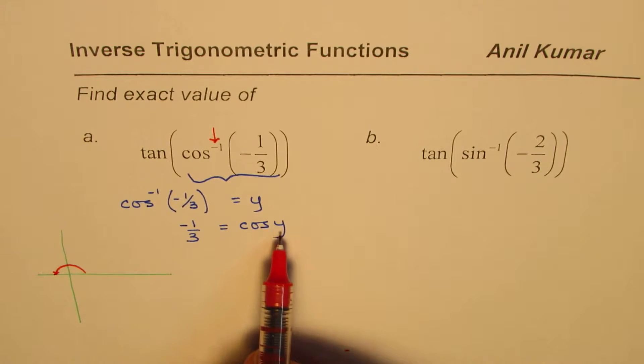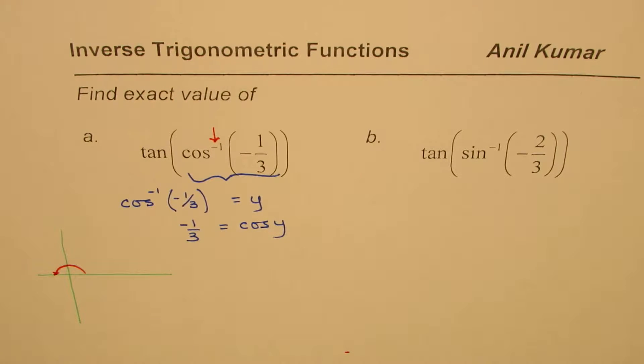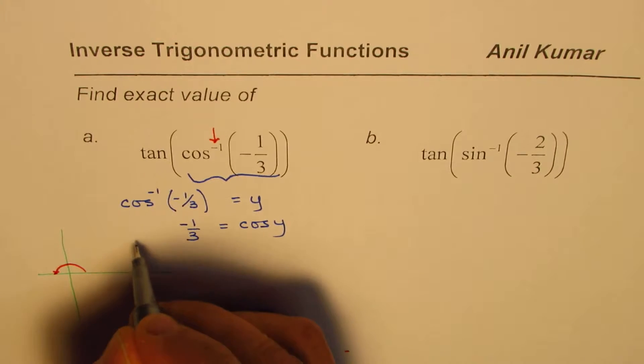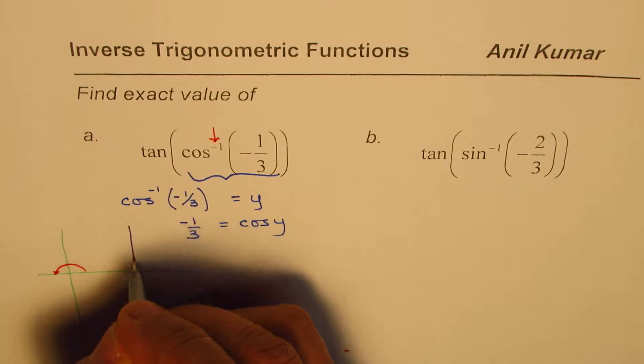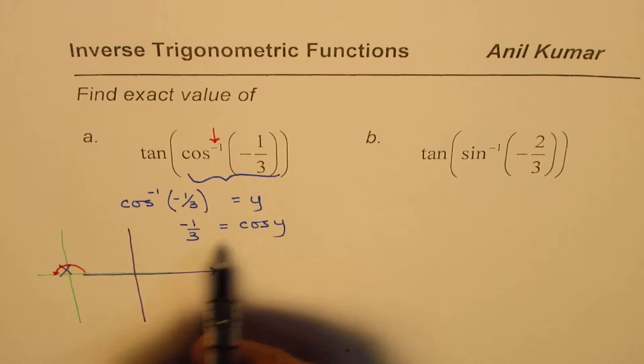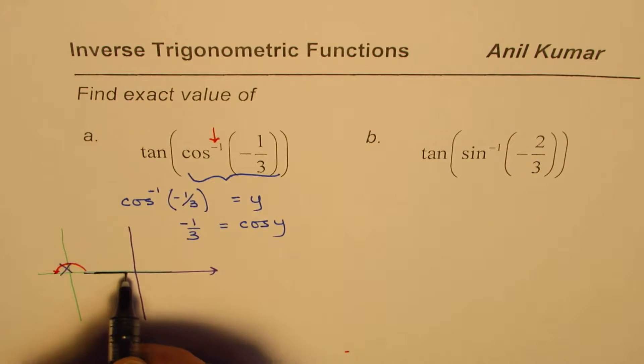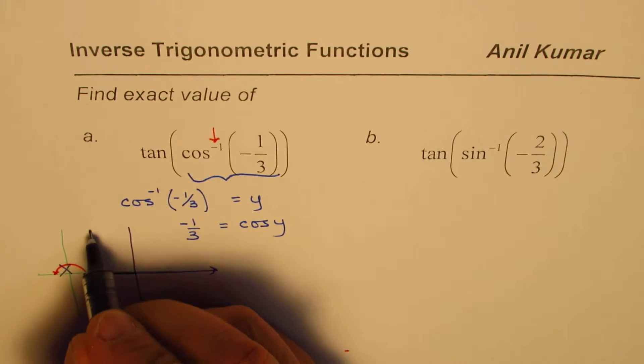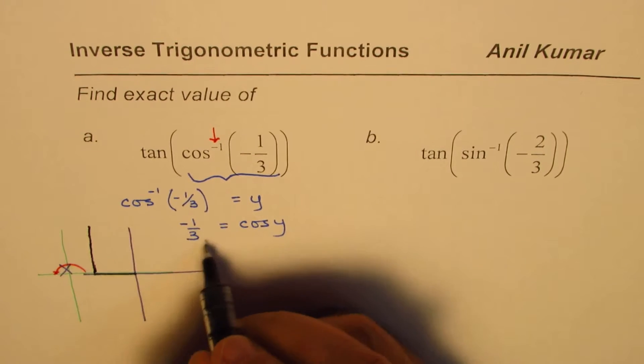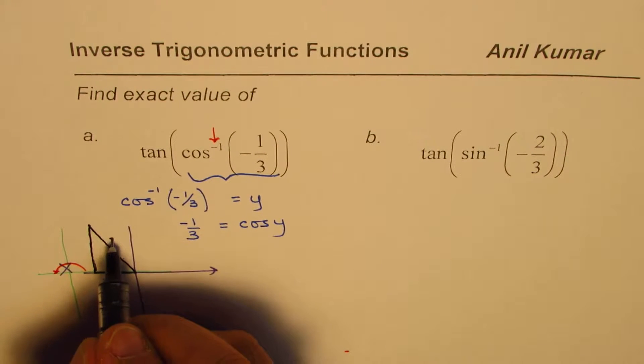Now since cos(y) is -1/3, then we can make a triangle here. I should have drawn this line a bit on this side. I'll redraw and change the scale. We'll just move on to this side because negative, so we have to go minus this side. When I say cos(y) is -1/3, minus 1 is the adjacent side. This is your minus 1, and 3 is hypotenuse.